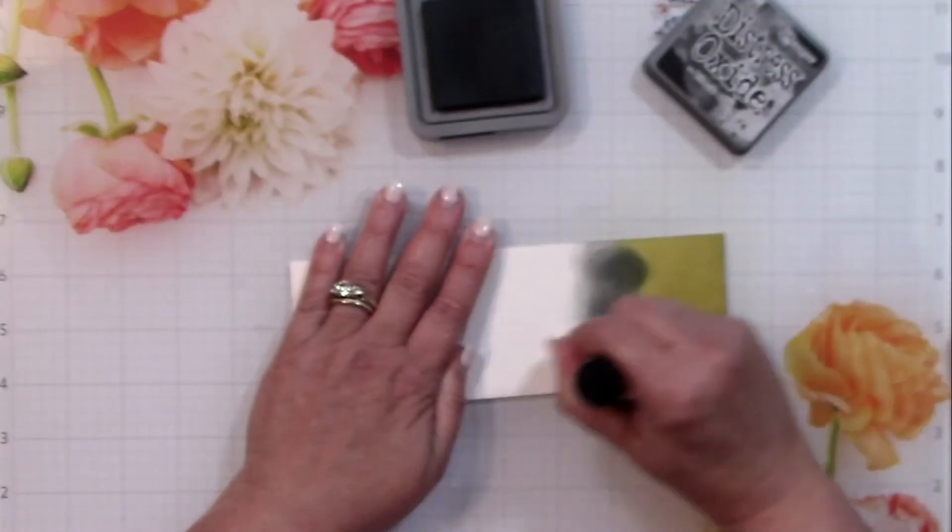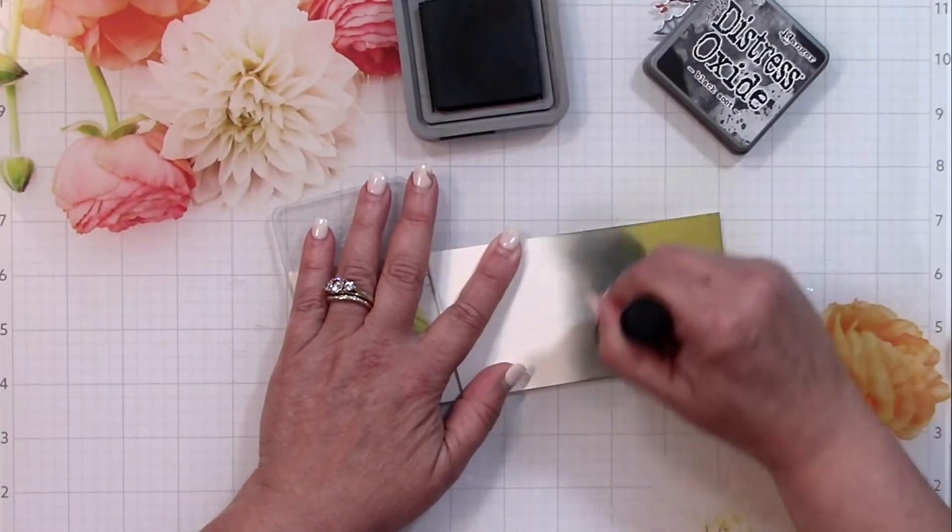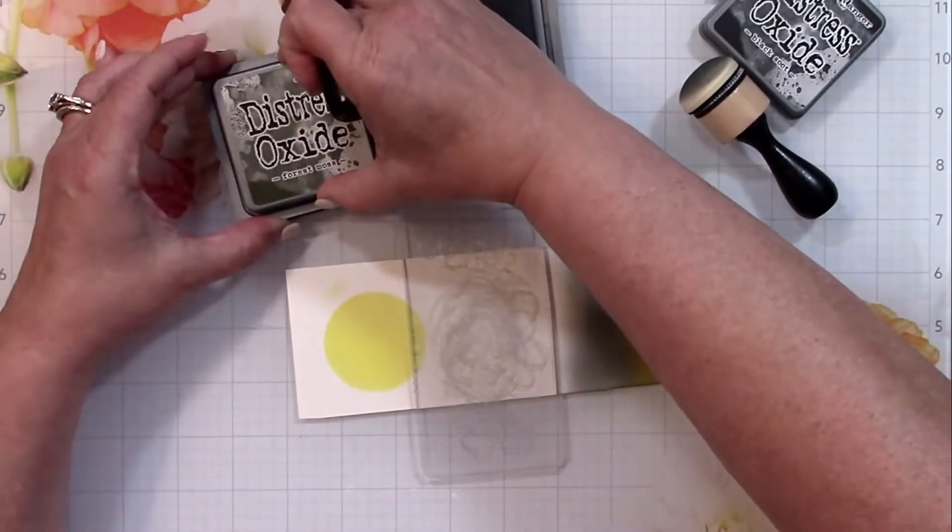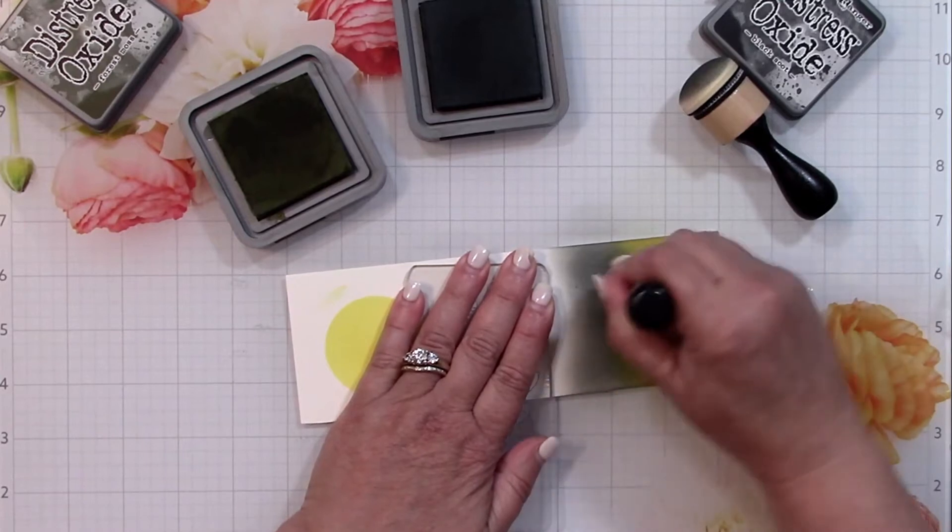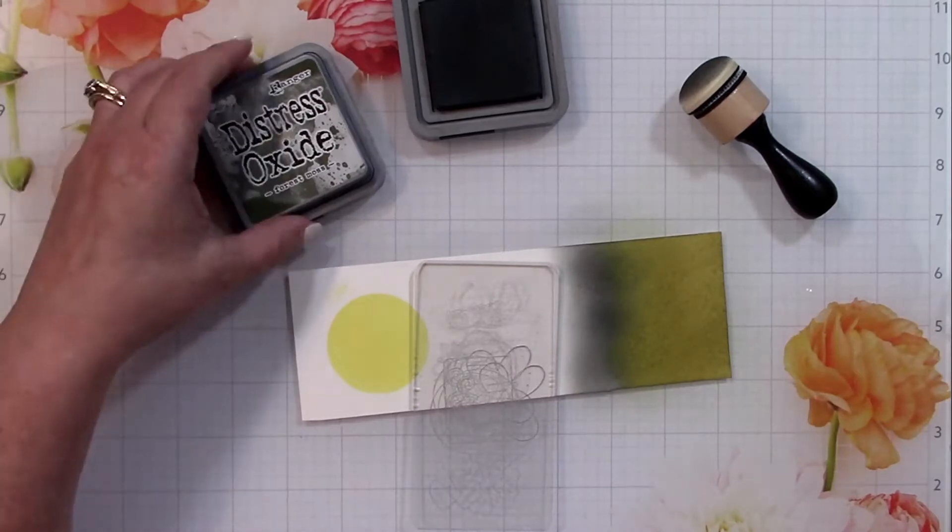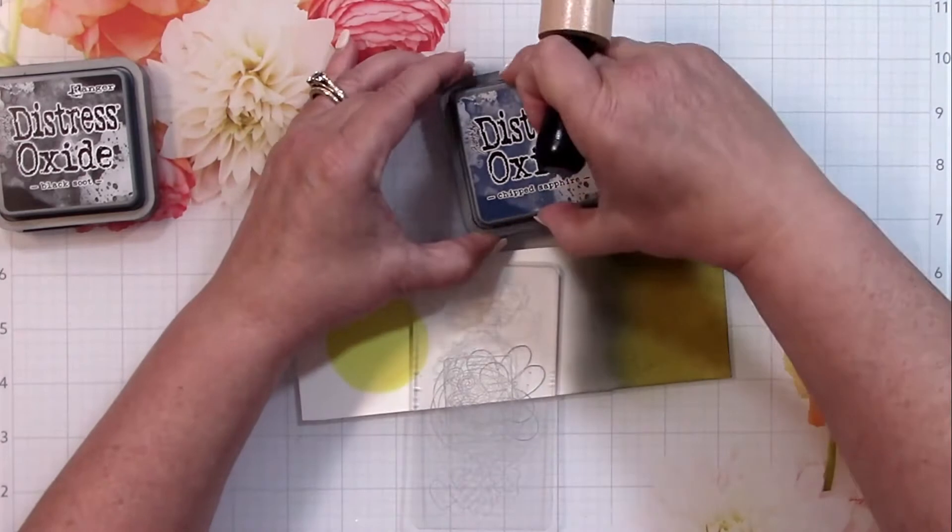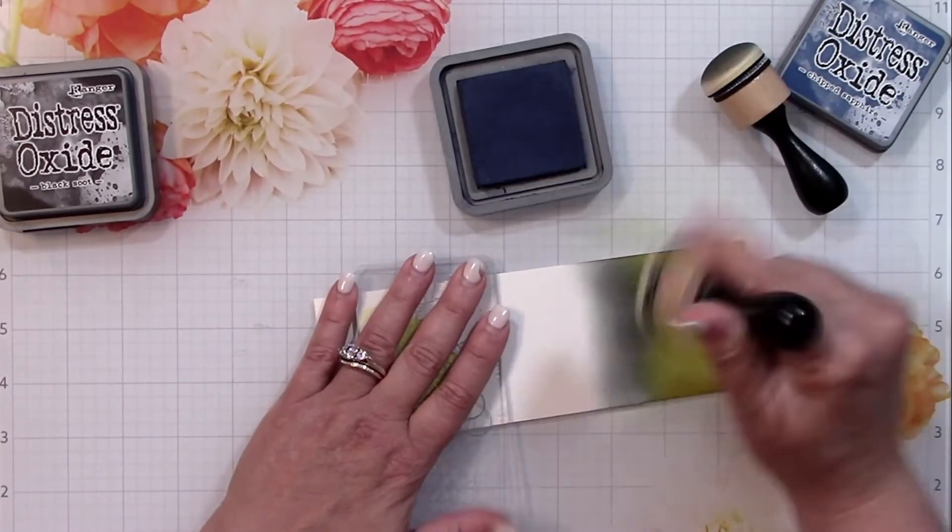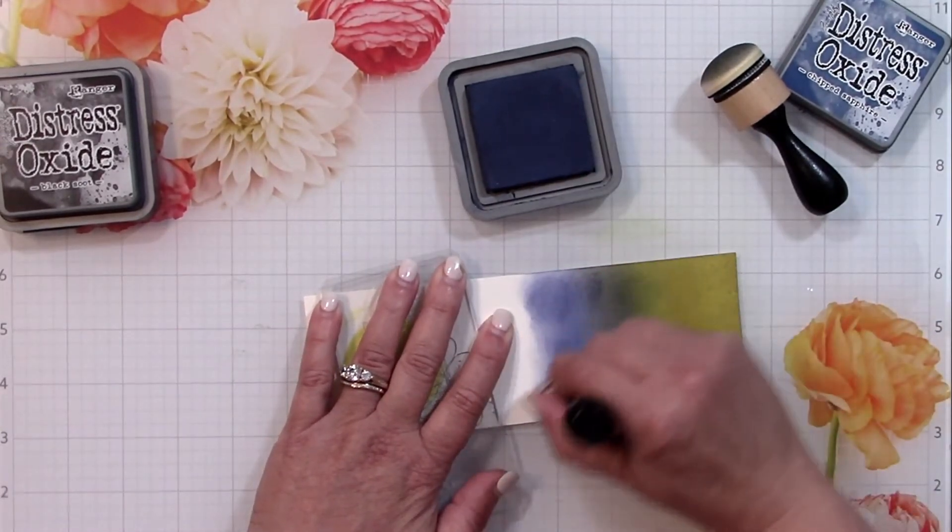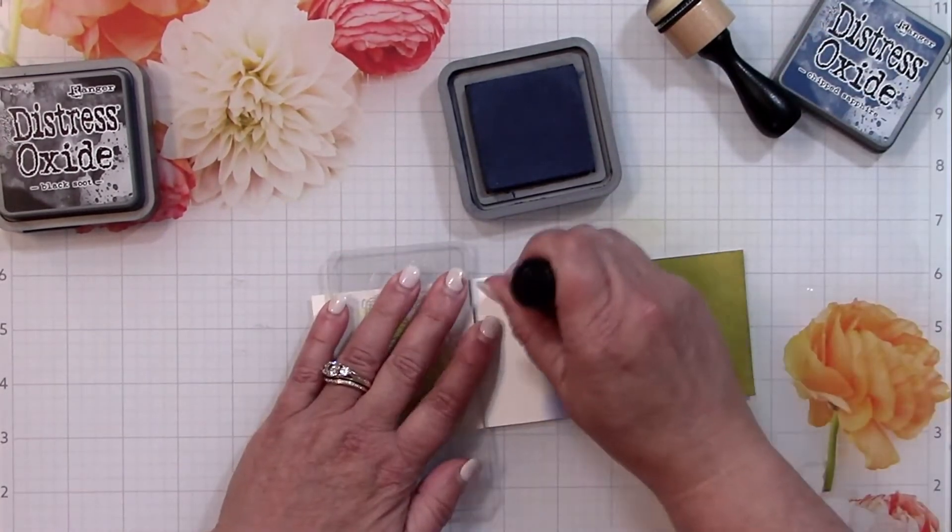I've started now with the ink blending on the background of this panel. I started with forest moss, a really deep dark brownish green color that's great for suggesting ground. The next color I'm using is black soot, which is going to start kind of a skyline demarcation between the ground and the sky. Then I'm coming in with cracked sapphire, a really dark blue ink color.